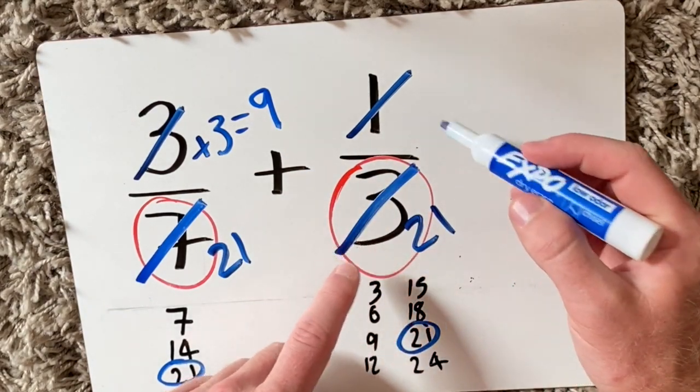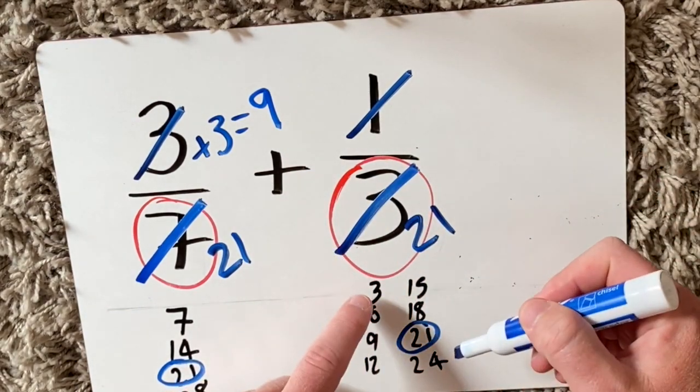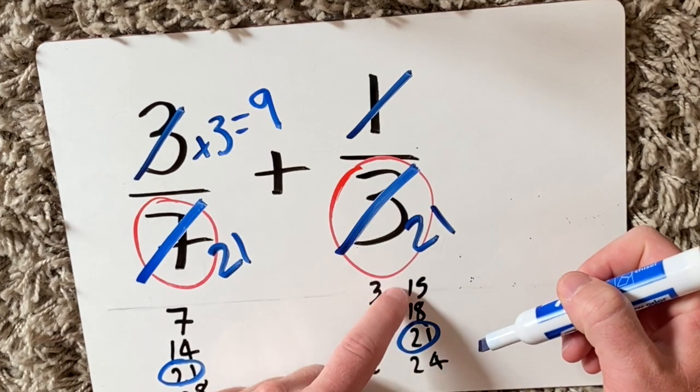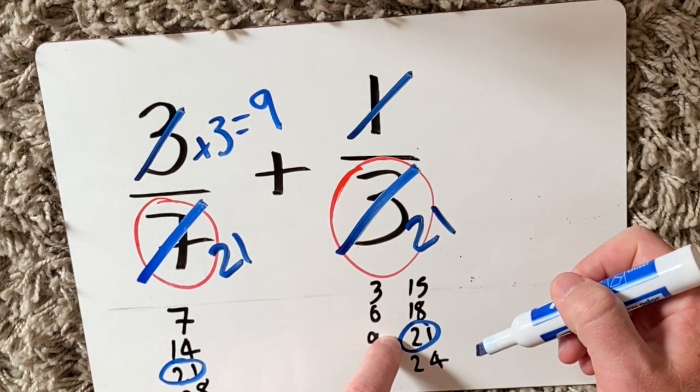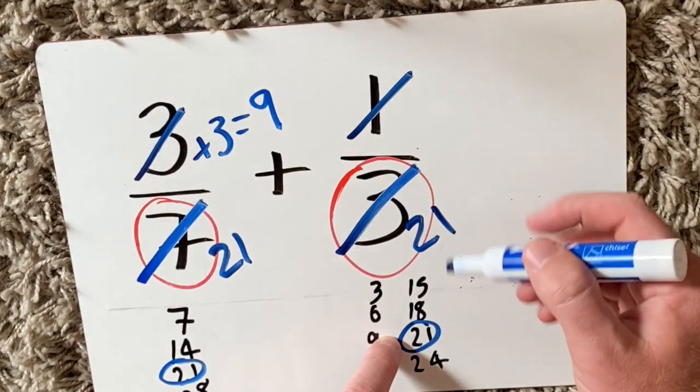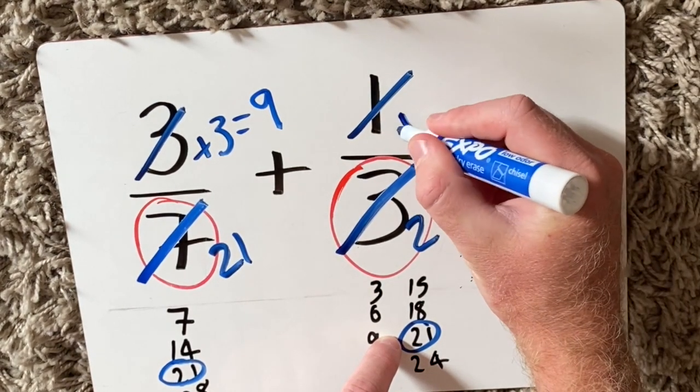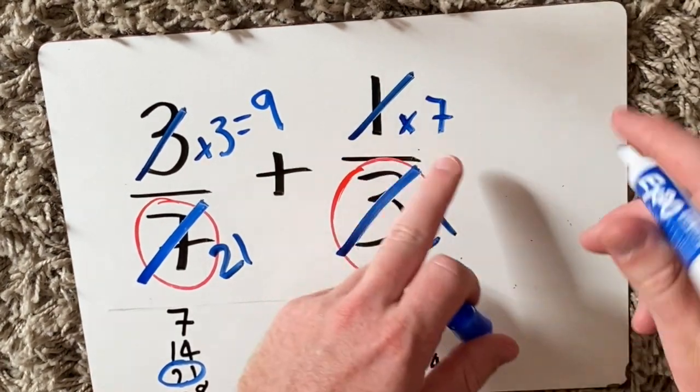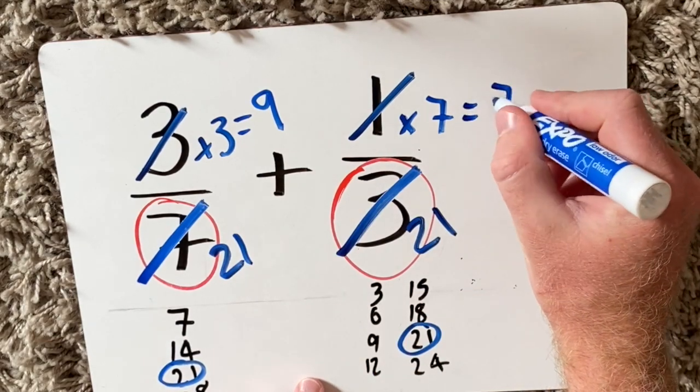For this one, twenty-one was the seventh in the three times table. One, two, three, four, five, six, seventh. So I'm going to do one times seven. One times seven is seven.